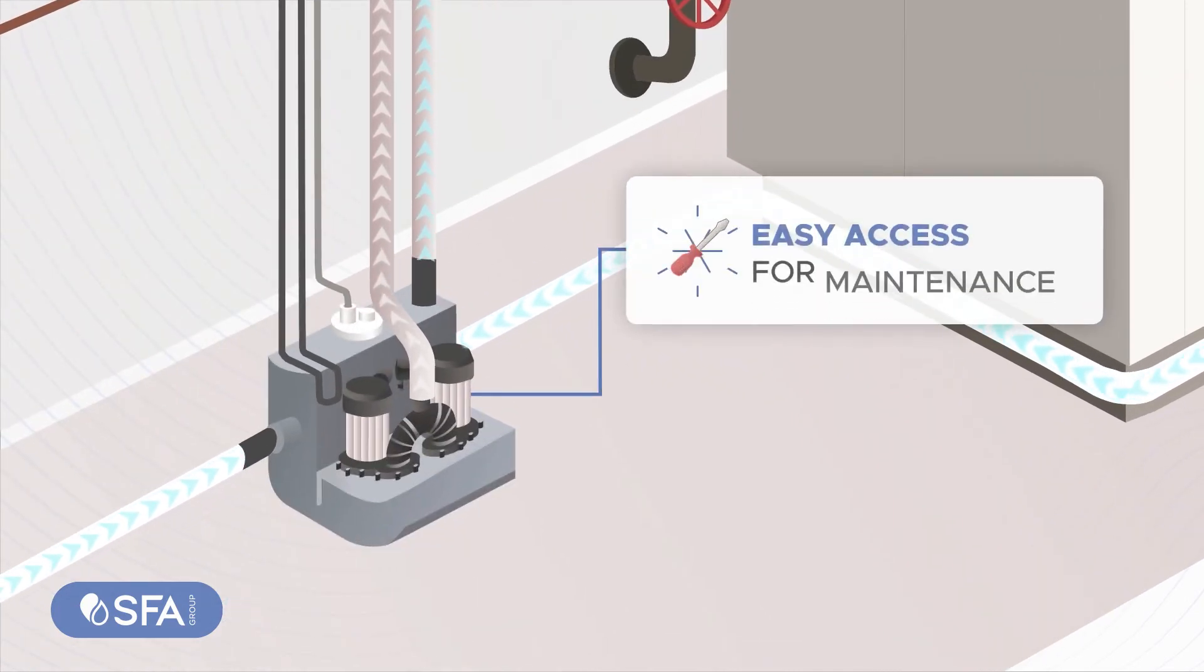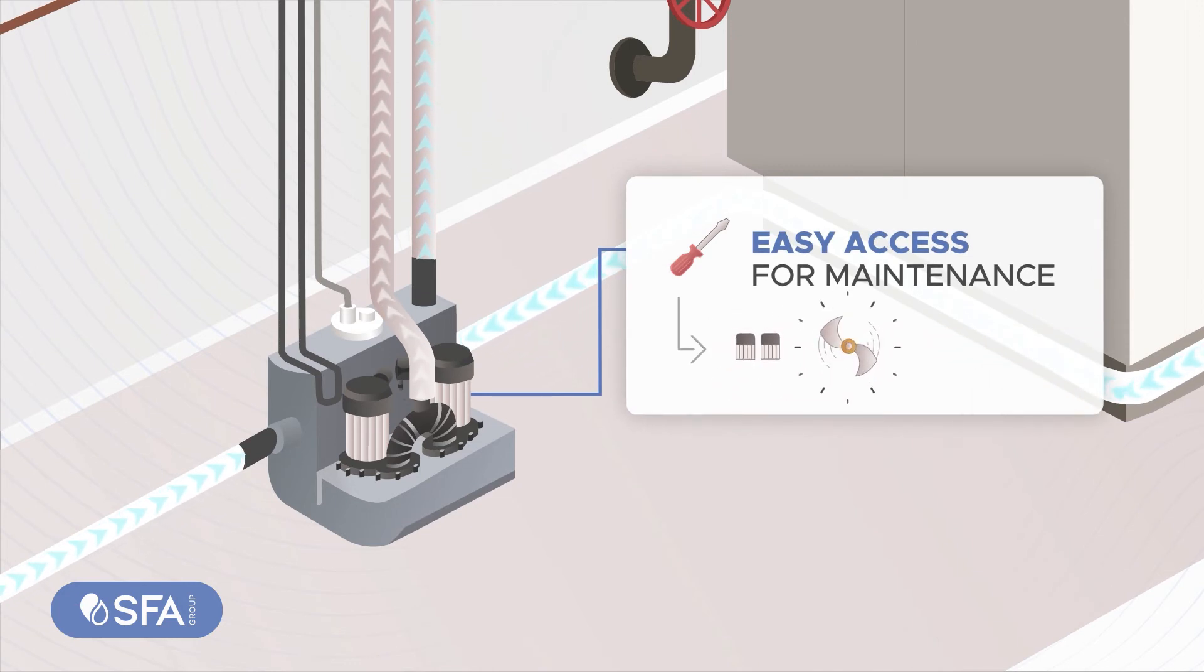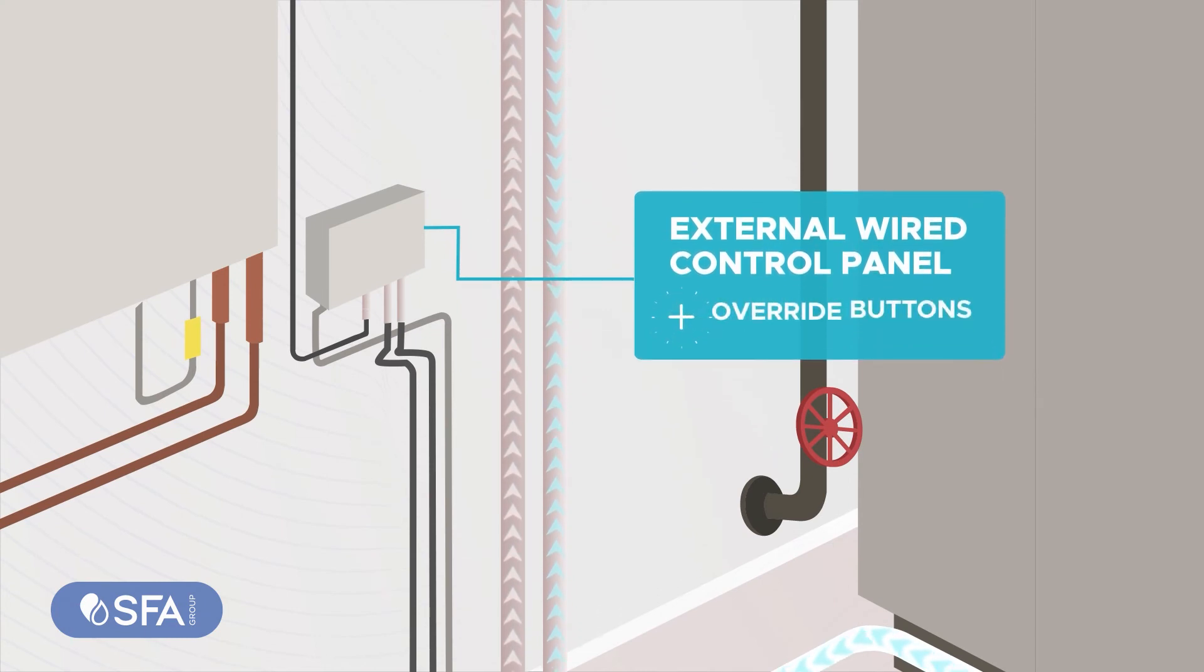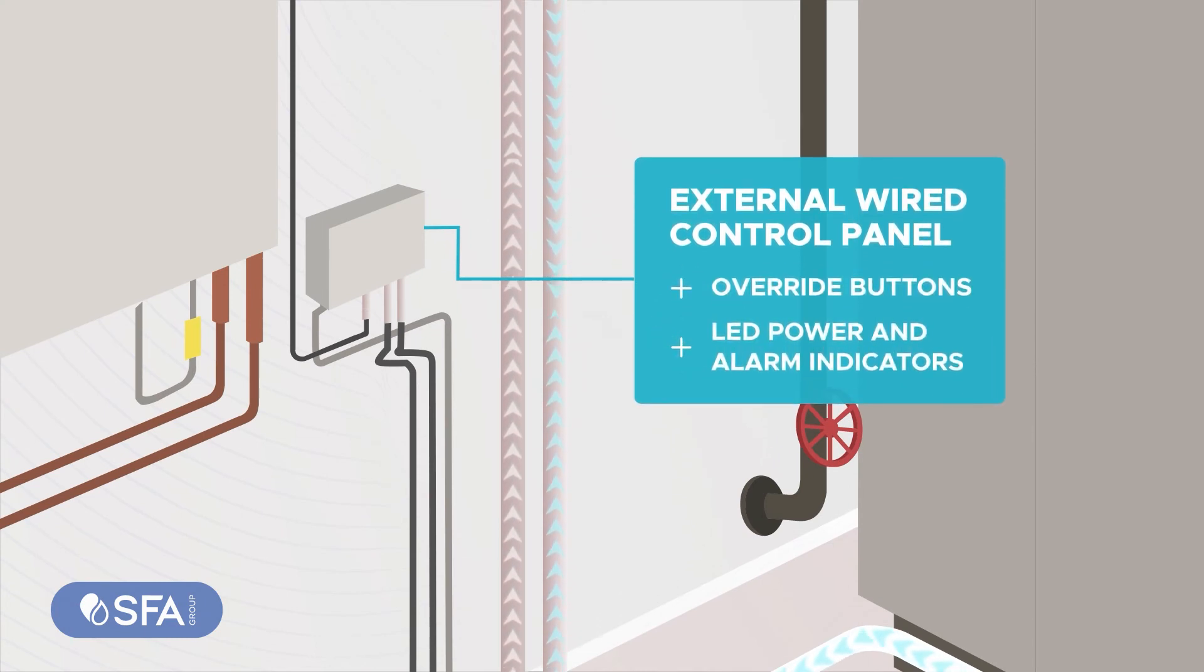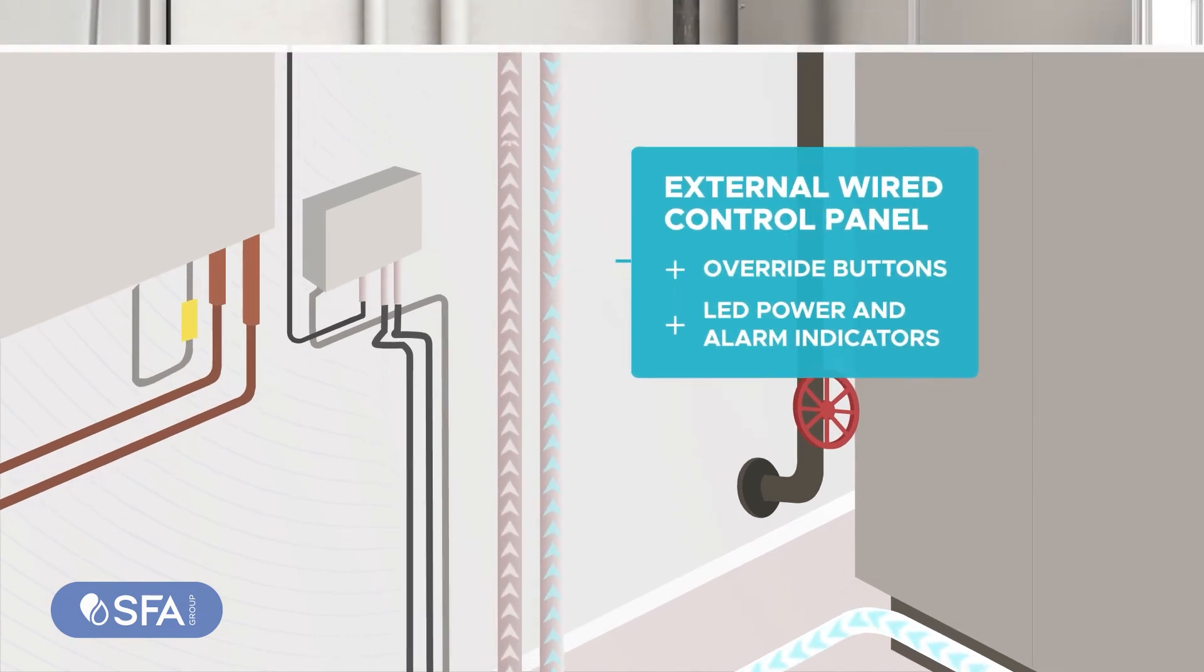There is easy access for maintenance to the motors, impellers, pressure switches, and dip tubes. The external wire control panel has override buttons and LED power and alarm indicators. It's that powerful.